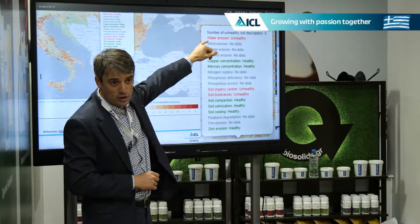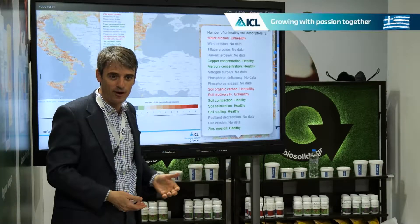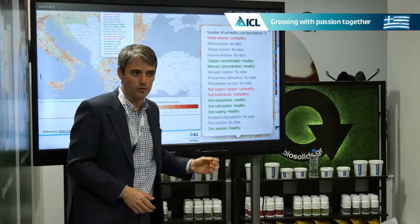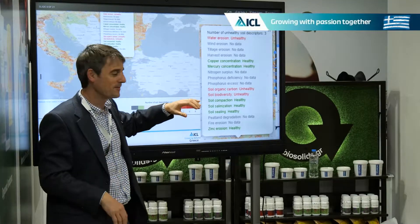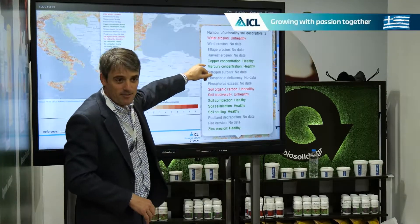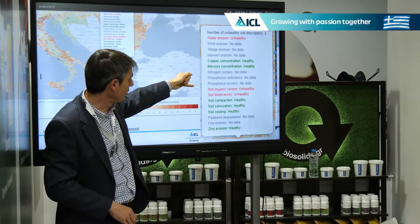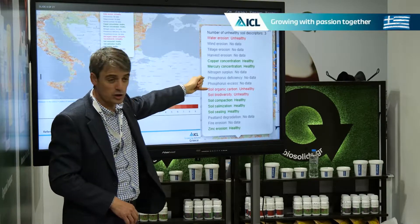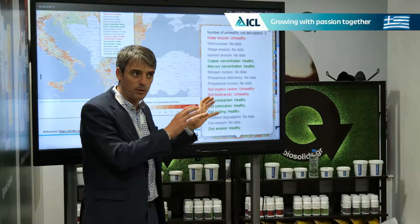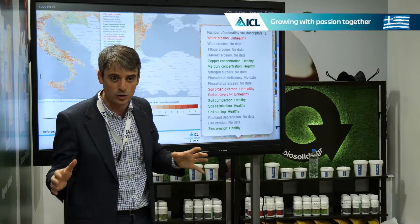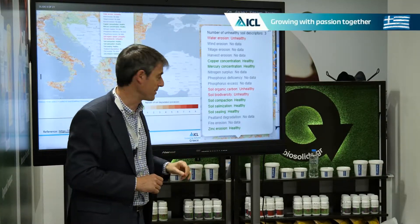From water erosion — which, under our Mediterranean conditions with heavy rainfall events, is a factor to consider, especially on a slope — it may be accumulation of heavy metals, too much or too little phosphorus. I will focus on soil carbon and on salinity, because with polysulfate, and with the combination of polysulfate and compost, we are targeting those aspects more precisely.